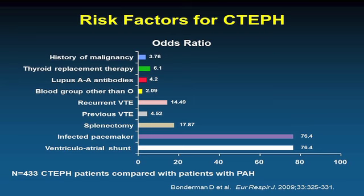Risk factors for CTEPH compared to non-thromboembolic pulmonary hypertension come from European registry data with odds ratios — highly inflated given the small numbers. Known risk factors include VA shunts, infected pacemakers, splenectomy, previous thromboembolic events particularly if recurrent, blood groups other than O, lupus anticoagulant, antiphospholipid antibodies, and history of malignancy. Thyroid replacement therapy was shown as a risk factor in one study but has not been consistently confirmed.